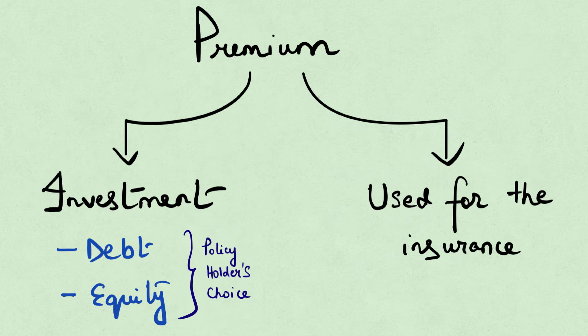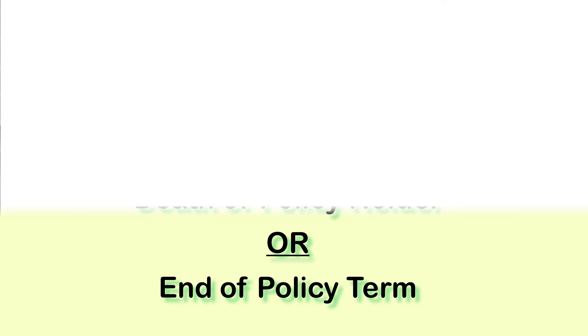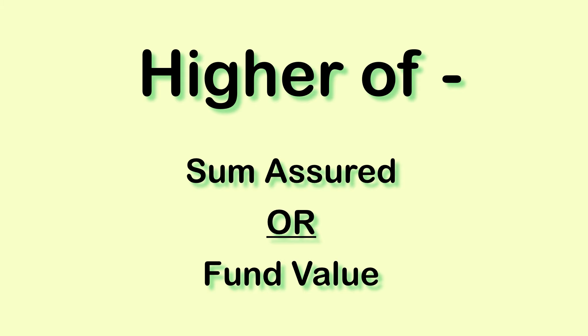The remaining part of the premium is utilized towards covering your life. The condition for receiving the coverage amount in a ULIP is the same as an endowment plan — if the person dies, they receive the amount, and even if they do not die till the end of the term, they get a lump sum. However, the lump sum received here is the higher of the sum assured or the fund value. The fund value is the market value of the investment made from your premium, which keeps changing depending on how the market performs.